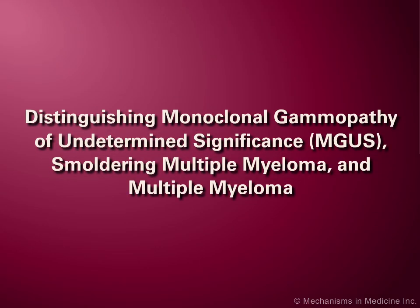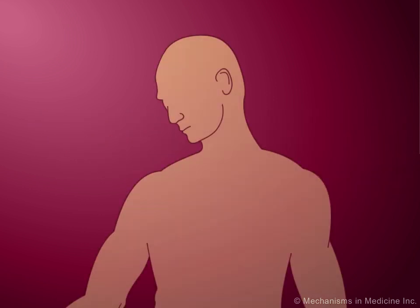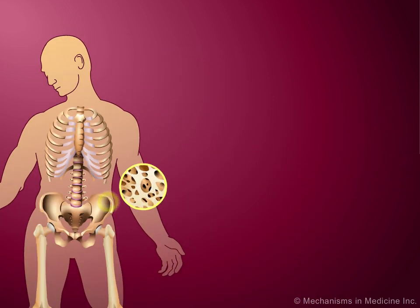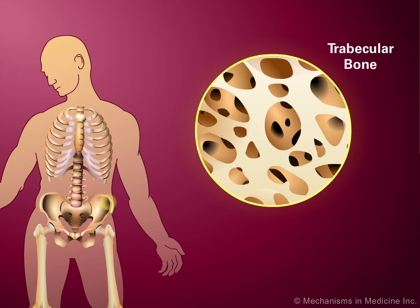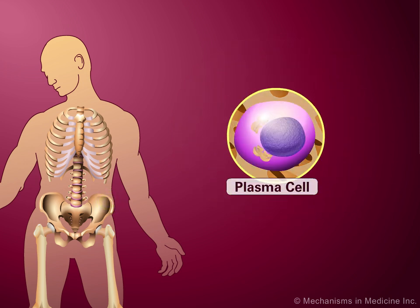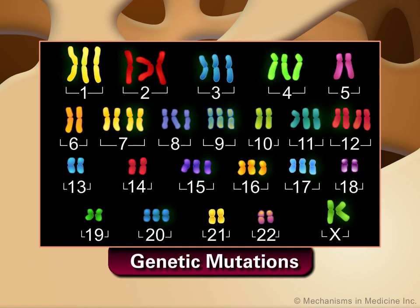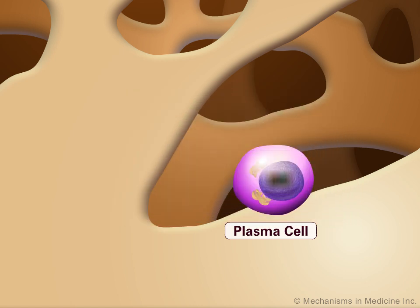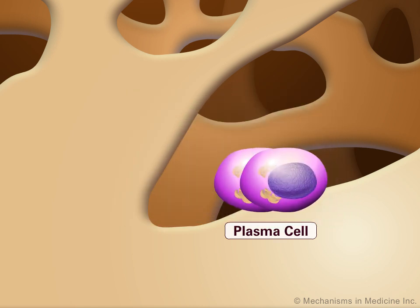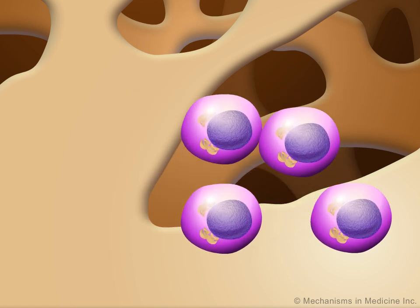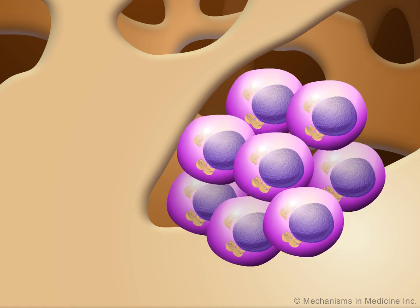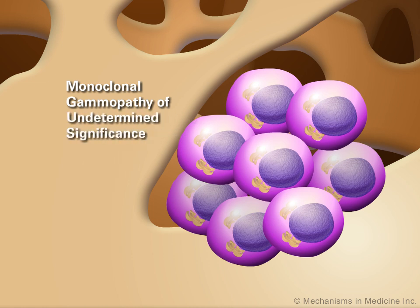Multiple myeloma is a disease characterized by the clonal expansion of malignant plasma cells. While the cause of myeloma is unknown, it is presumed that multiple mutations induce the transformation of plasma cells. Such mutations may permit the cell to expand into a small clonal population, resulting in a condition called Monoclonal Gammopathy of Undetermined Significance, or MGUS.